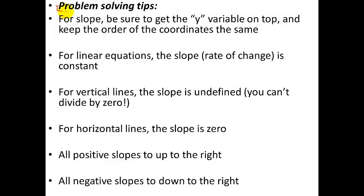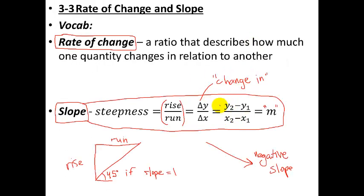Problem solving tips. For slope, make sure you put the y variable on top and keep the coordinates consistent. The most common mistake is flipping it — putting x's on top and y's on the bottom. The second most common mistake is mixing up the subscripts 1 and 2. It's okay to do y1 minus y2 as long as you also do x1 minus x2, because which point you call point 1 and which you call point 2 doesn't matter — just keep the same one in front and the same one in back, and keep your y's on top and x's on the bottom.